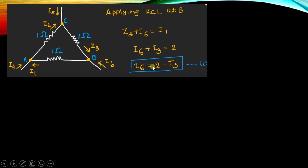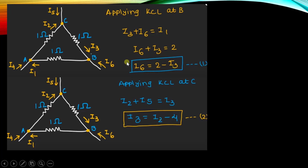To find I6, we first need to find I3. Since I3 also appears at node C, we apply KCL at node C. At node C, currents I5 and I2 are the incoming currents and I3 is the outgoing current. So I2 plus I5 equals I3, which can be written as I3 equals I2 plus 4, since we know the value of I5.